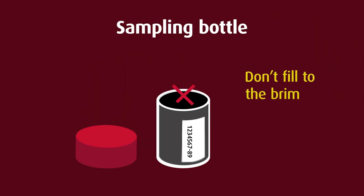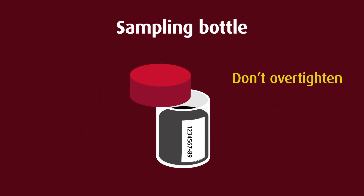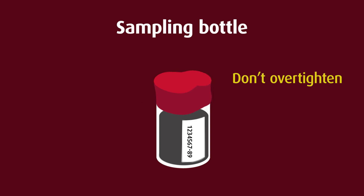Don't fill the bottle right to the brim when taking the sample — just fill to the level of the top of the label or the bottom of the thread. The reason is that when the sample gets to the laboratory, it gets agitated in a paint shaker to mix the oil properly. If there is no air gap in the sample bottle, it does not get agitated sufficiently. Don't over-tighten the bottle when sealing it. If the oil is really hot, it may make the plastic slightly soft. Just tighten the lid with moderate pressure, and when the bottle is cool, you can check the seal again.